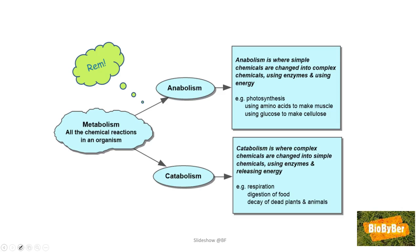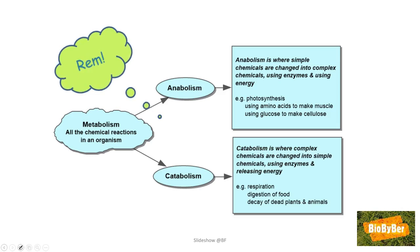Remember there are two types of metabolism: anabolic reactions — anabolism — and catabolic reactions — catabolism. Anabolic reactions are where simple chemicals are changed into complicated or complex chemicals, using enzymes and using energy. I like to think of anabolism as USA: using enzymes, using energy — that's U and A — and S, taking simple chemicals and making them into complicated ones. That's anabolism: USA.